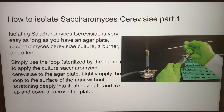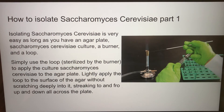Isolating Saccharomyces cerevisiae is very easy as long as you have an agar plate, a Saccharomyces cerevisiae culture, a burner, and a loop. Simply use the loop, sterilized by the burner, to apply the culture to the agar plate. Lightly apply the loop to the surface of the agar without scratching deeply into it, streaking back and forth all across the plate.